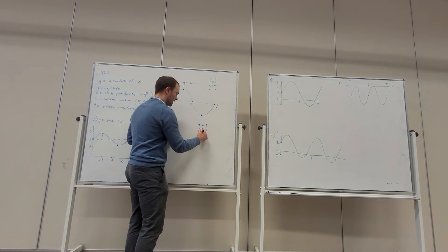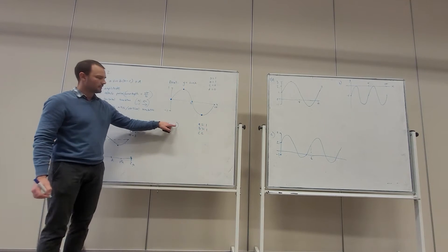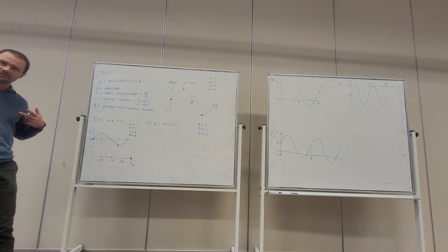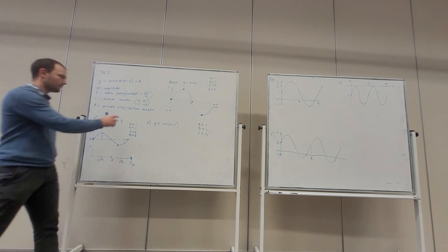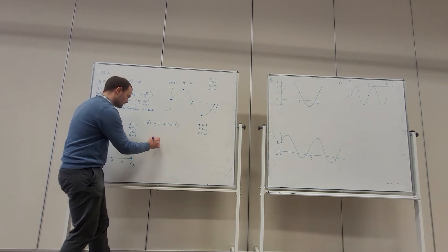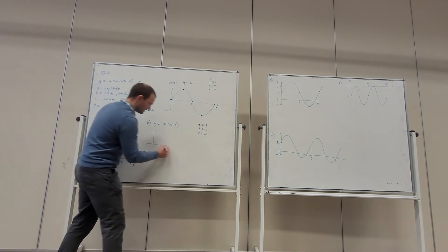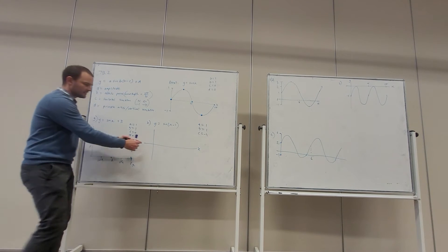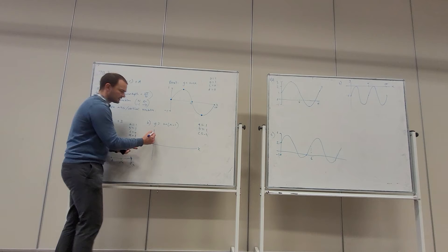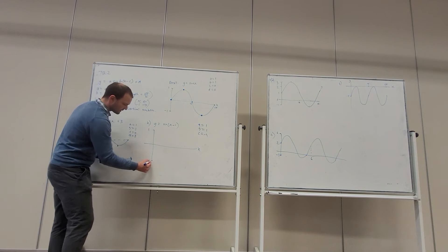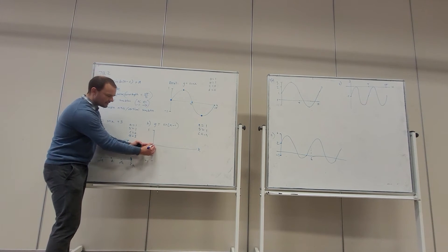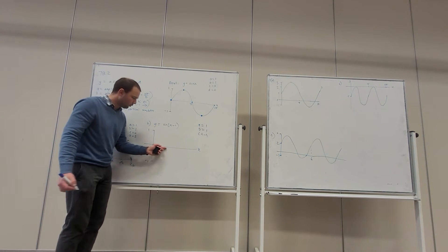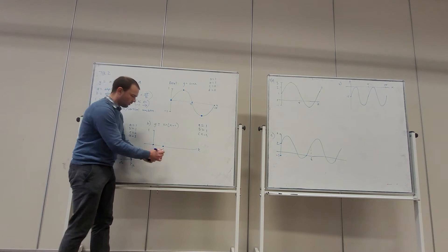So here we've got A is 1, B is 1, and C is minus 1, which means it's being shifted to the right 1 unit. The way we're going to sketch that: it's not being shifted up or down, so our principal axis is still the x-axis. It still has an amplitude of 1 and minus 1, but rather than starting at 0, the starting point has shifted 1 unit over — it's going to be starting here at 1.